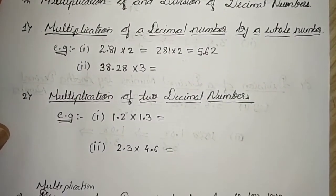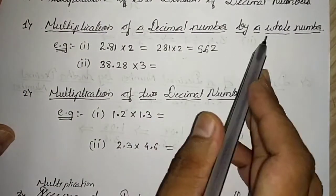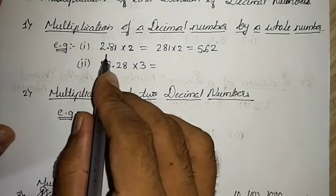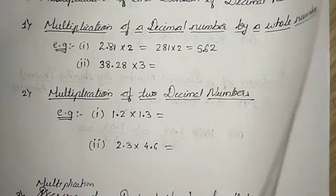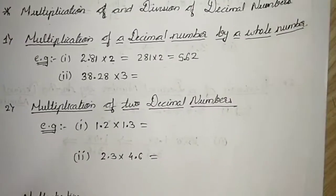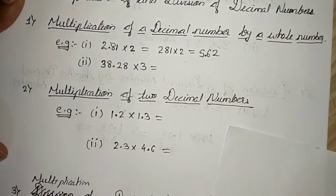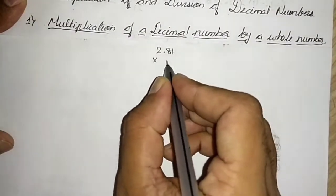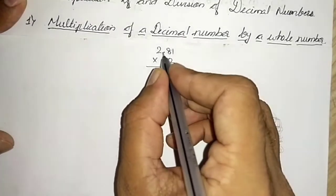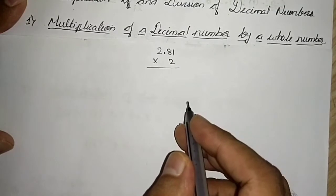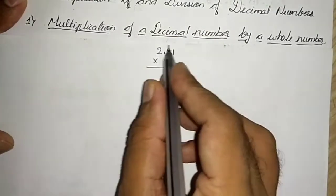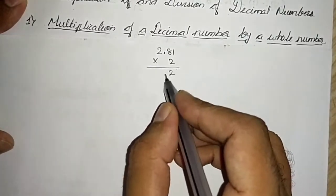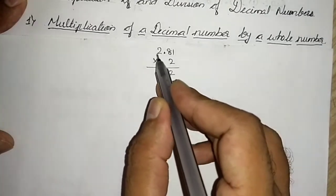Let us start with multiplication of decimal numbers by a whole number. I will start with one example: let us solve 2.81 × 2. Whenever there is a decimal number and a whole number, consider it as a whole number — don't take the decimal part. Multiply: 2 ones are 2, 8 twos are 16, carry 2, 2 twos are 4 plus carry gives 5.